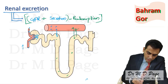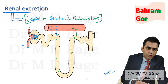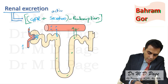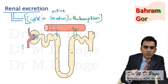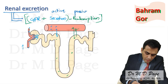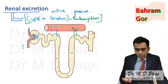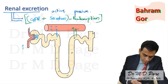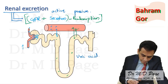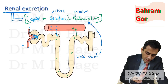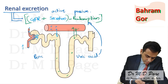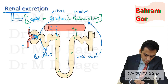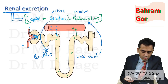This secretion is due to transport mechanisms — it is an active process. Reabsorption is simply because the drug is lipid soluble — it is a passive process. Usually, the body tries to retain endogenous products — for example, uric acid — so the body reabsorbs it. Exogenous substances like penicillin, on the other hand, the body tries to secrete.